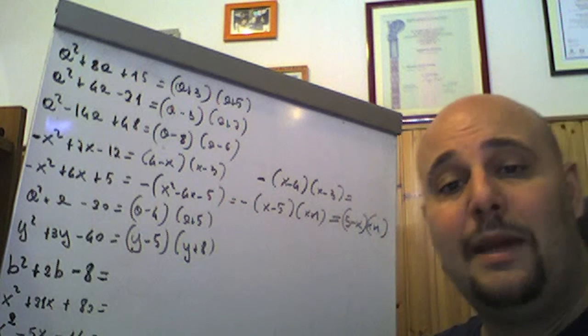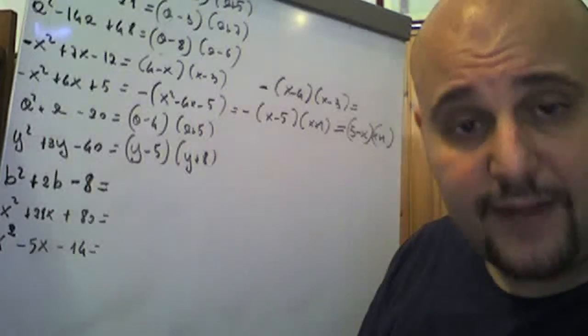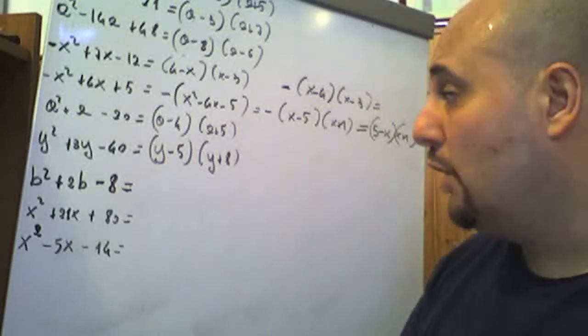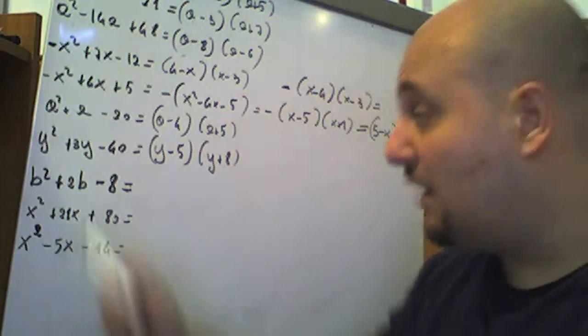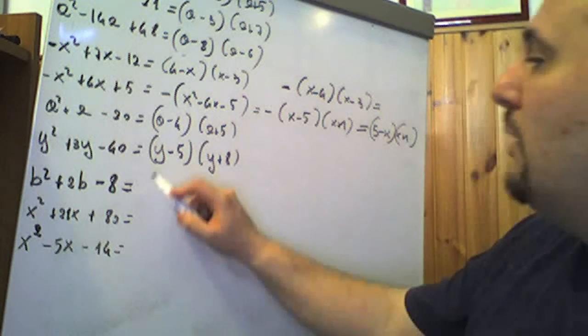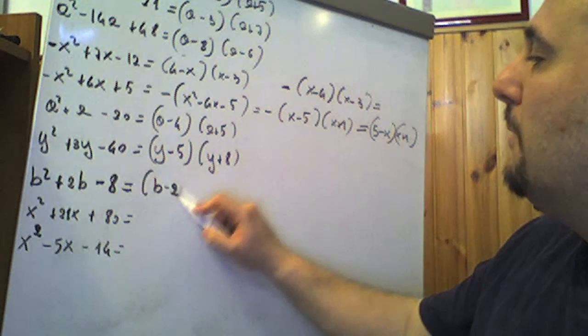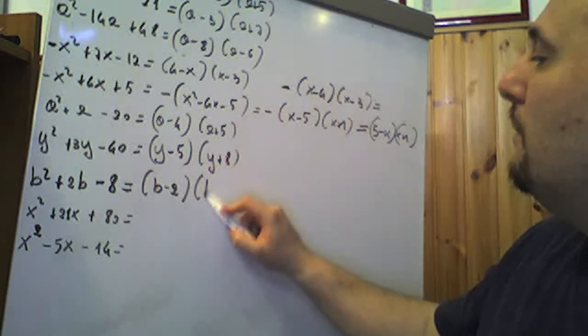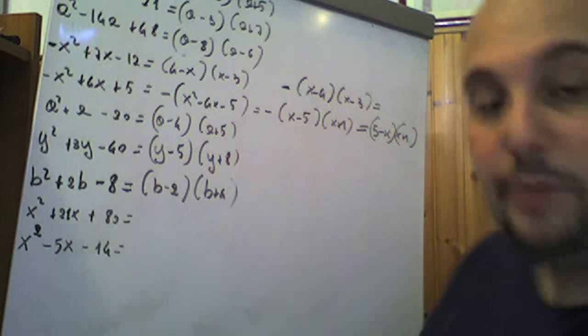B² + 2b − 8, trinomio notevole di secondo grado nella variabile b: è evidente che 4 − 2 = 2 e 4 × (−2) = −8. Quindi è (b − 2)(b + 4).